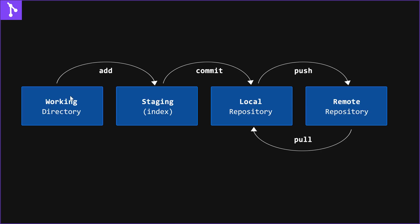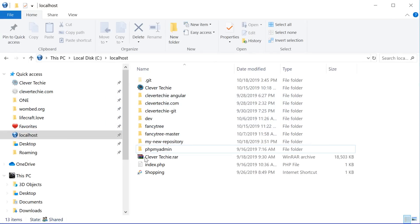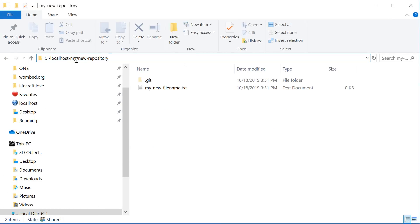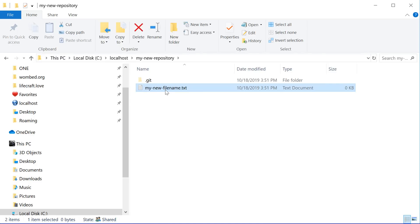Let's look at the workflow of how Git works. We start with the working directory where we have just added our new file. The next step is to add the file to the staging environment, also known as the index. You can think of the staging as giving the file to the librarian before it gets committed into the actual library, which is going to be our local repository.